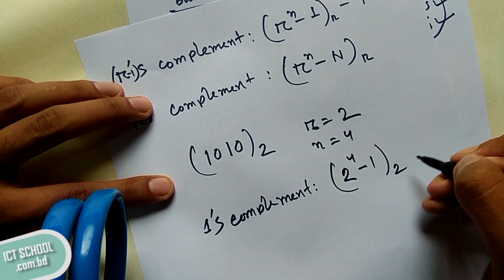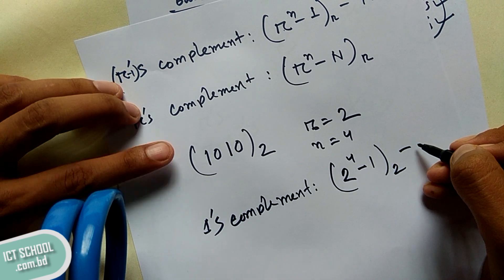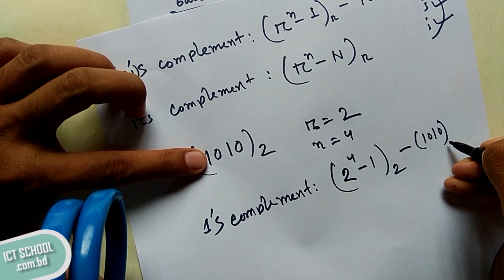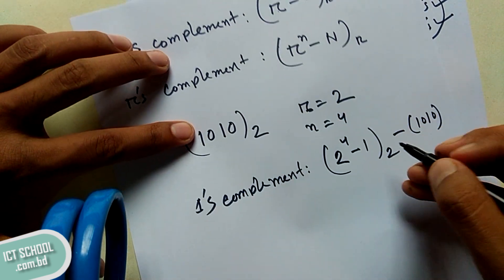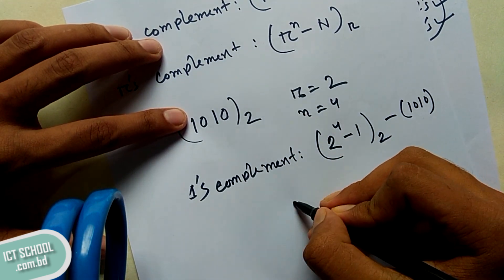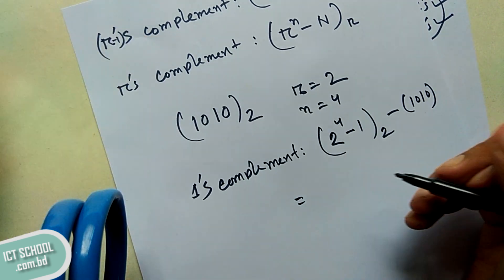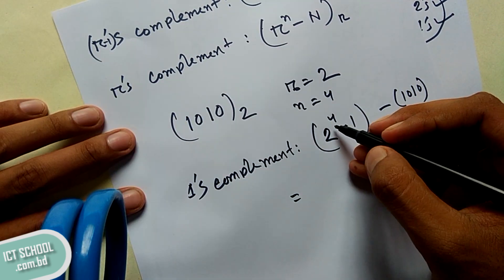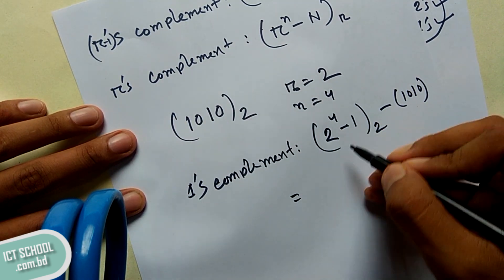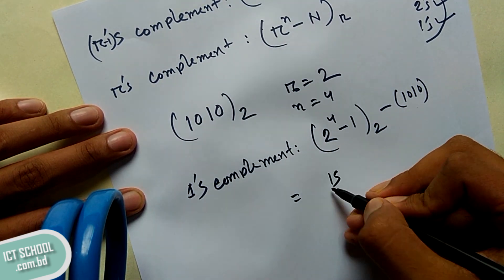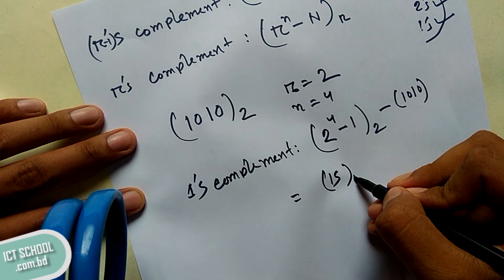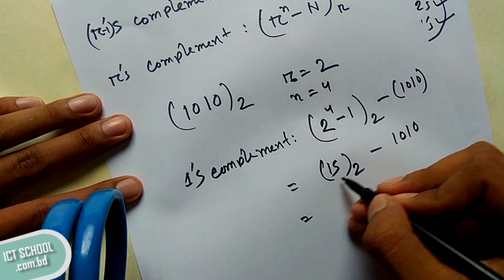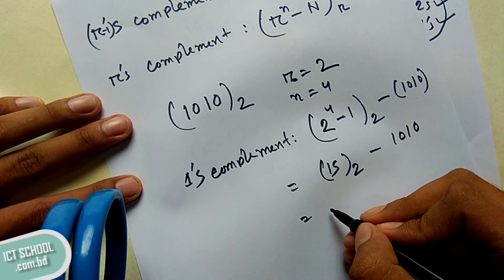When n equals 4, so 2 to the power 4 is 16. 16 minus 1 is 15. So 15, 15 minus 1 is 0, 1, 0.